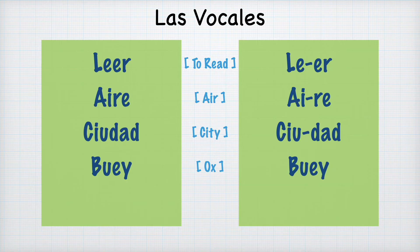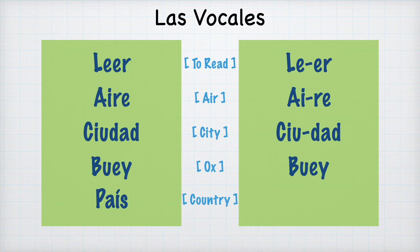There's one big exception to all of this: when there's an accent mark on a weak vowel, it becomes a strong vowel. For example, país — we have the letter A, a strong vowel, and the letter I, a weak vowel, but it has the accent. That turns it into a strong vowel and it creates its own syllable. País. We will look at accent marks in a different class, but it's important to note this exception.